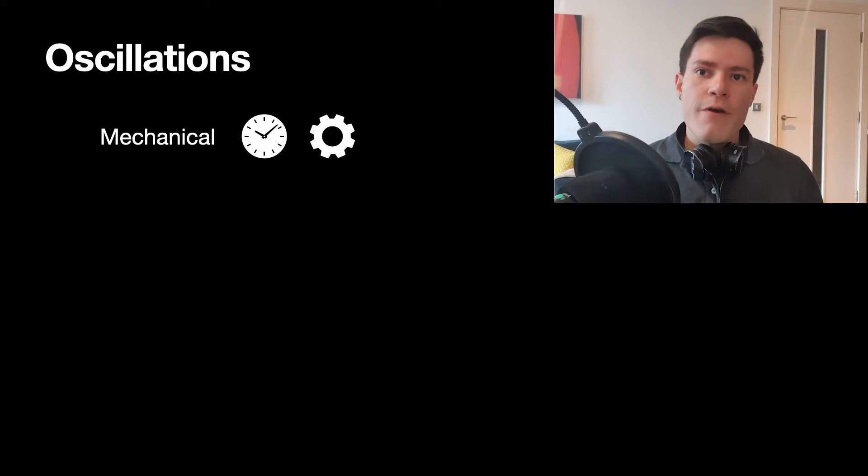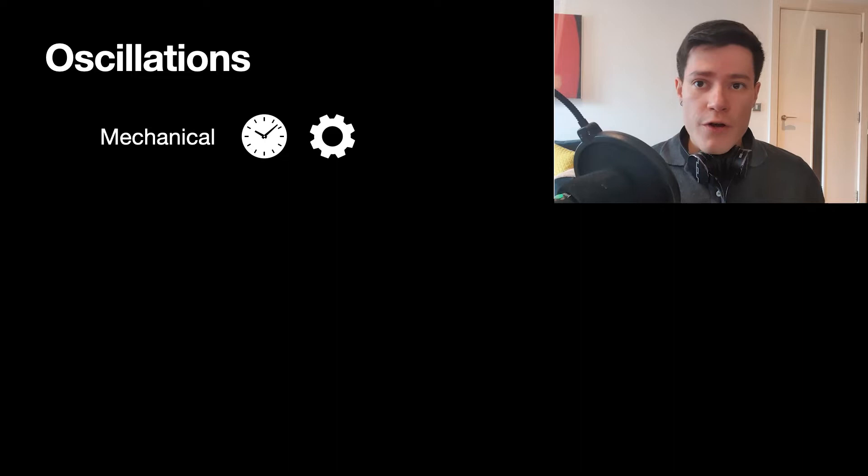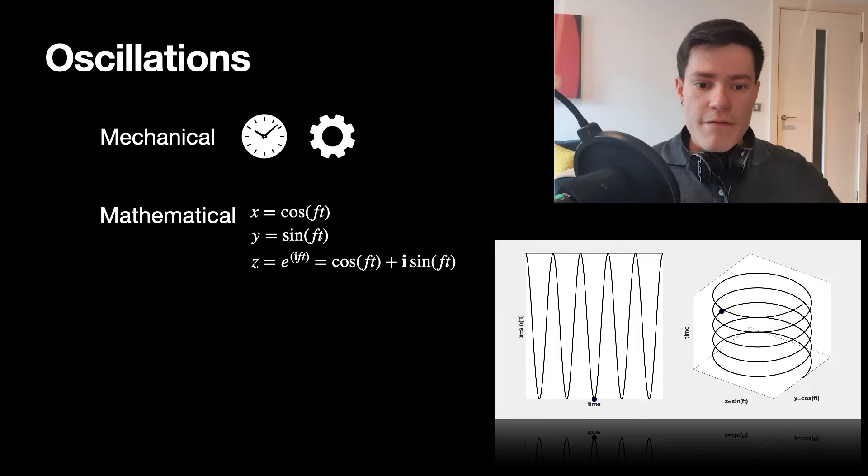Today we're going to talk all about oscillations, which are things that move rhythmically or repeatedly in a periodic fashion. Many examples exist, but I'll just name a few: we can think about mechanical devices like clocks or metronomes, pendulums or gears, or we can think of them as mathematical constructs.